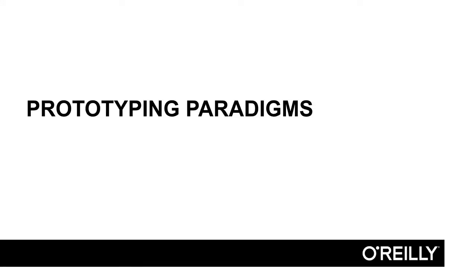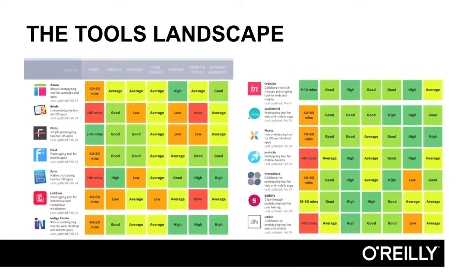The universe of digital prototyping tools is exploding. Each new player strives to differentiate themselves in a crowded arena. It seems like every day there's a new prototyping tool coming on the market, and each one has to shout loudly to stand out. 'I'm visually programmed. I run native code. I've got spring physics.' Total confusion ensues. Are these differences essential, or just on the surface?